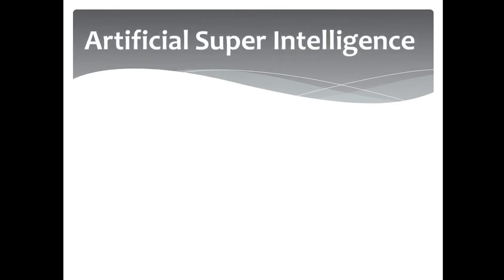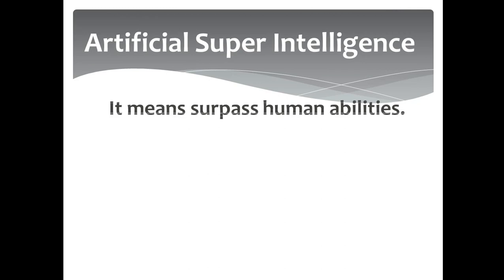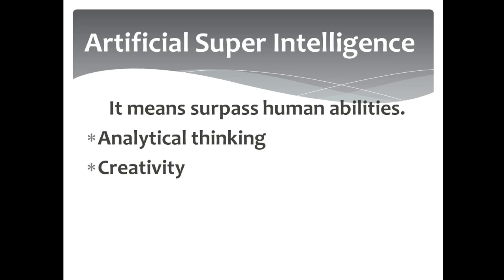Next is ASI — Artificial Super Intelligence. It means surpassing human capabilities. For example, analytical thinking — which means thought, creativity, the power to do something different, and improving performance. These are the super intelligence powers, or we can say the abilities of artificial intelligence that surpass human abilities.